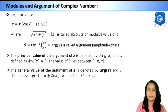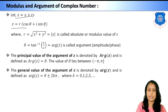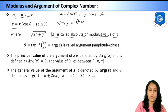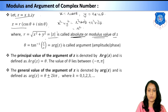Now let us discuss the modulus and argument of a complex number. For z = x + iy (Cartesian form) and z = r(cos θ + i sin θ) (polar form), r = √(x² + y²), which we write as |z|, known as the absolute value or modulus of z. Since x = r cos θ and y = r sin θ, squaring and adding confirms r = √(x² + y²).